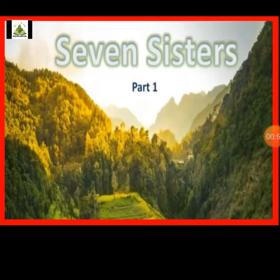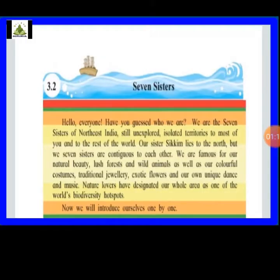We are going to divide the seven sisters chapter into two parts. In this class, we are going to finish pages 51 to 54. In the next class, we will do the remaining three states. Total seven states are there, so today we will finish four states and the next class we will finish the remaining three. I want you to open your textbook with a pencil in front of you.